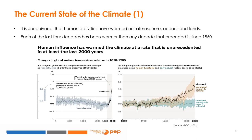These past warm periods were caused by slow, multi-millennial orbital variations. The gray shading with white diagonal lines shows the very likely ranges for the temperature reconstructions. Panel B shows changes in global surface temperatures over the past 170 years, annually averaged, relative to 1850 to 1900, compared to the CMIP-6 climate model simulations of the temperature response to both human and natural drivers shown in brown, and to only natural drivers — solar and volcanic activity — shown in green. Solid colored lines show the multi-model average, and colored shades show the very likely range of simulations.